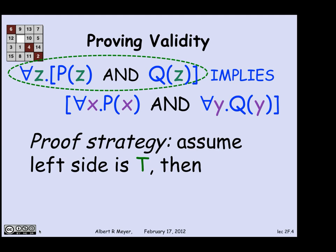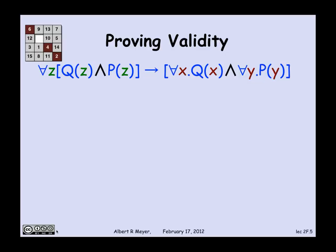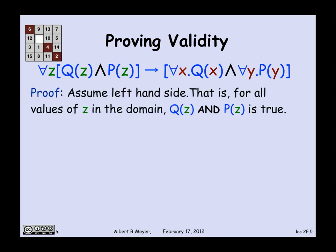Namely that the right-hand side, for all x P of x and for all y Q of y holds. Here's the formula written to fit on the line with concise mathematical symbols. The upside-down v means and, and the arrow means implies. We want to try to prove that this is valid a little bit more carefully. The strategy is to assume that the left-hand side holds.